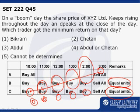Therefore, definitely in this case, Bikram or B is the person who gets the minimum amount of return.